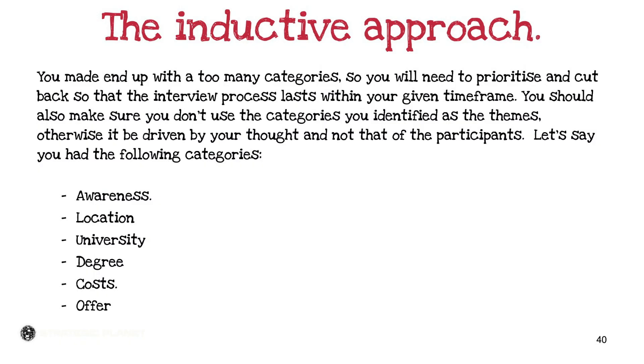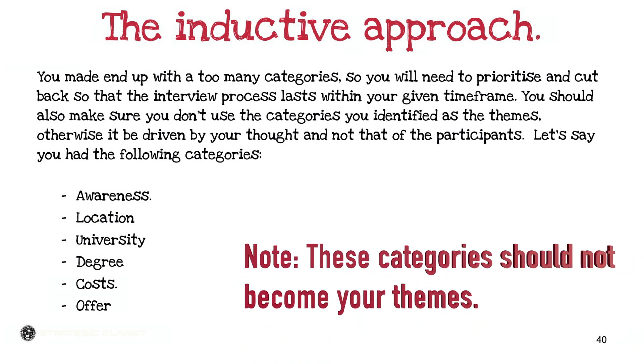I've now developed six categories to expand on, which will give me an answer to my research objective or question. The categories are: awareness, location, university, degree, cost, and offer. Part of this is based on wanting to find out why individuals chose to join the university, so I can develop a new marketing program to attract more students. If you end up with 15 or 20 categories from a brainstorming session, you'll need to prioritize and cut them down — six to eight could be pushing it, and 20 will be far too many.